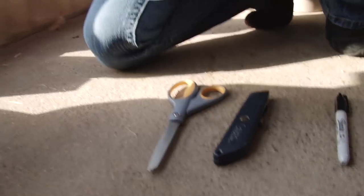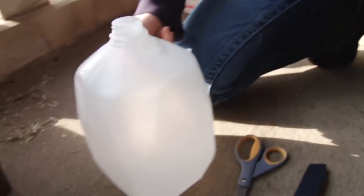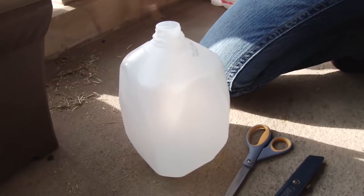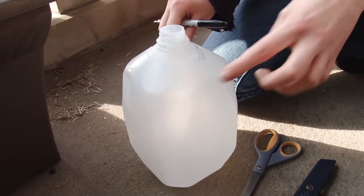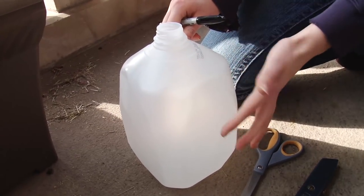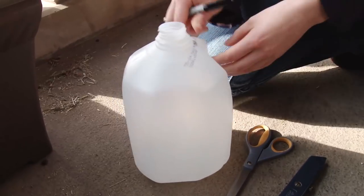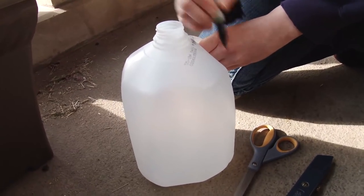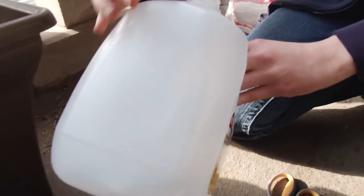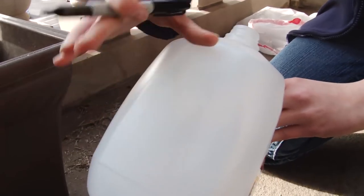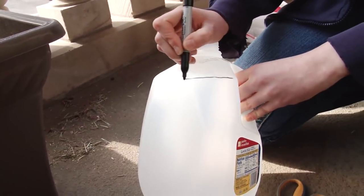So you take your milk jug when it's all clean, and what you want to do is cut off the top of it. How far down you cut will depend on how big of an opening you want and how much soil you want in there. I'm going to draw a line on the area where it goes from flat and starts curving inwards - this is where we want to cut it.